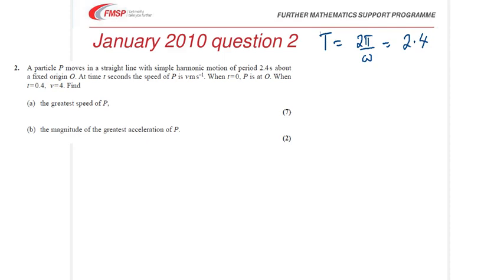Well, I might as well do that now then. So, ω is 2π over 2.4, or 5π over 6.